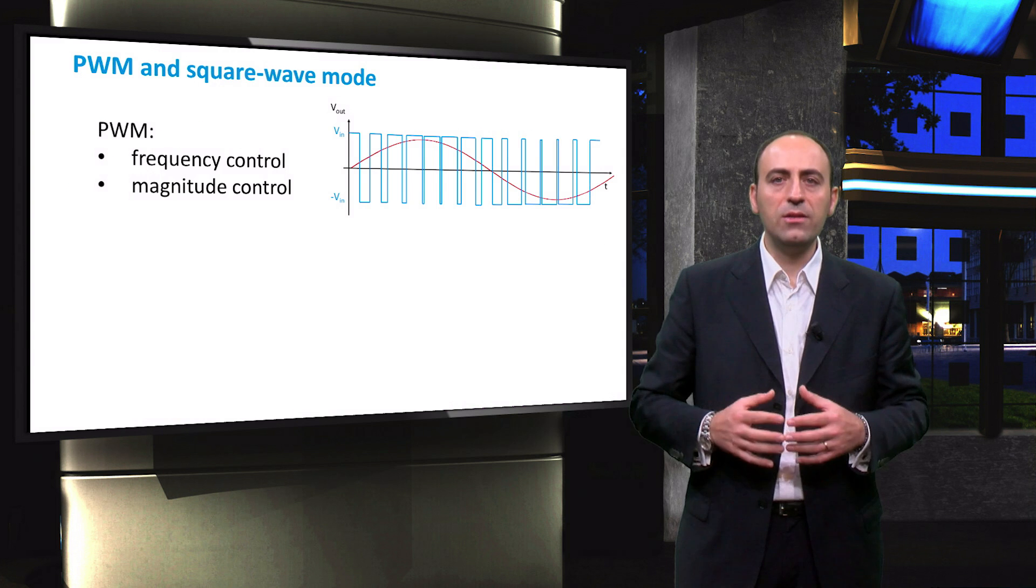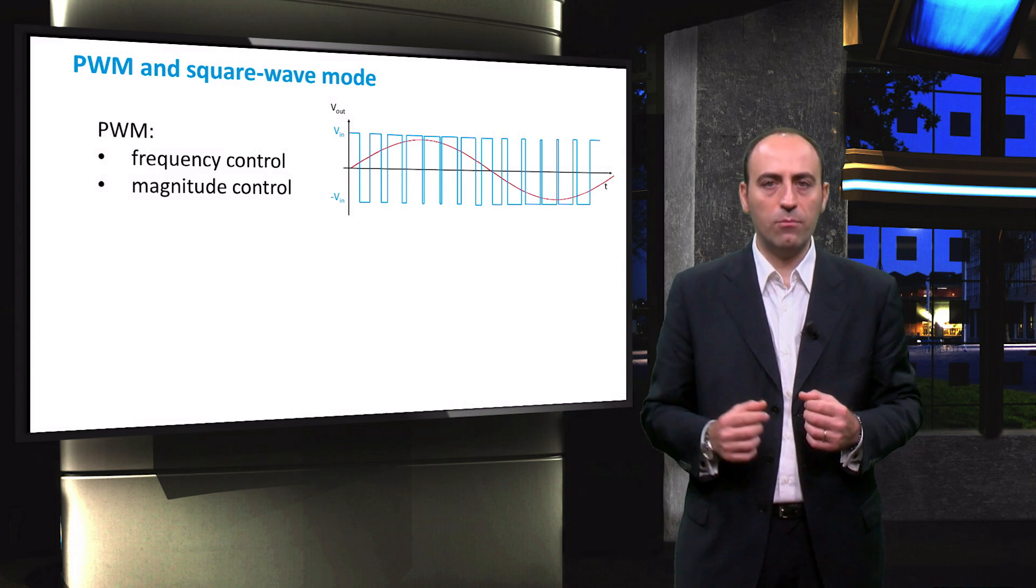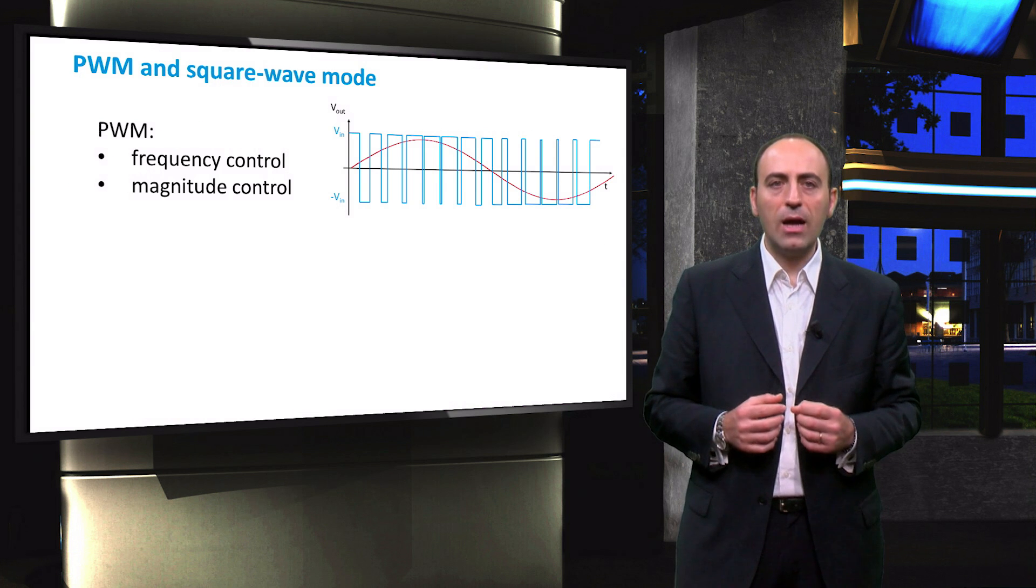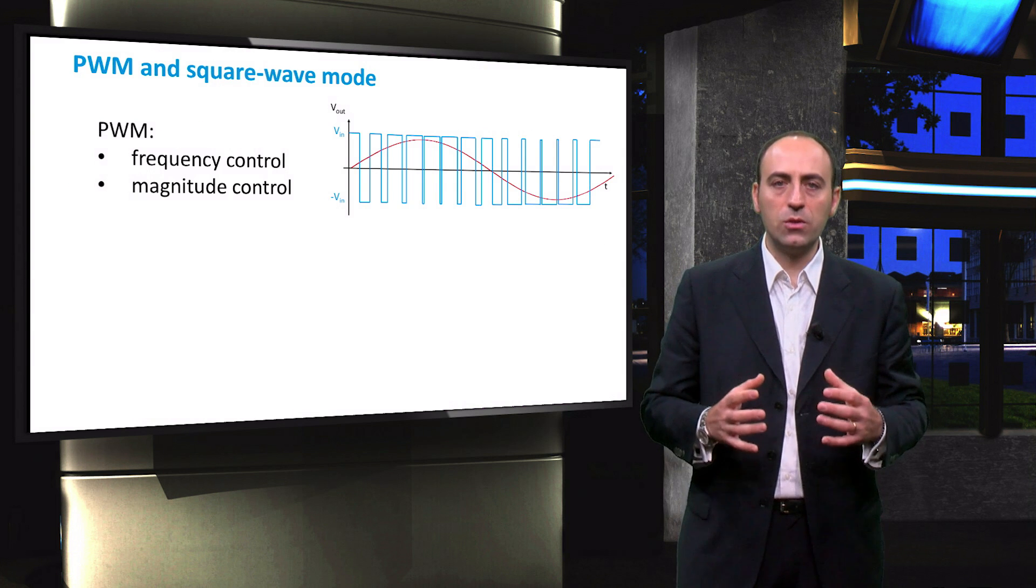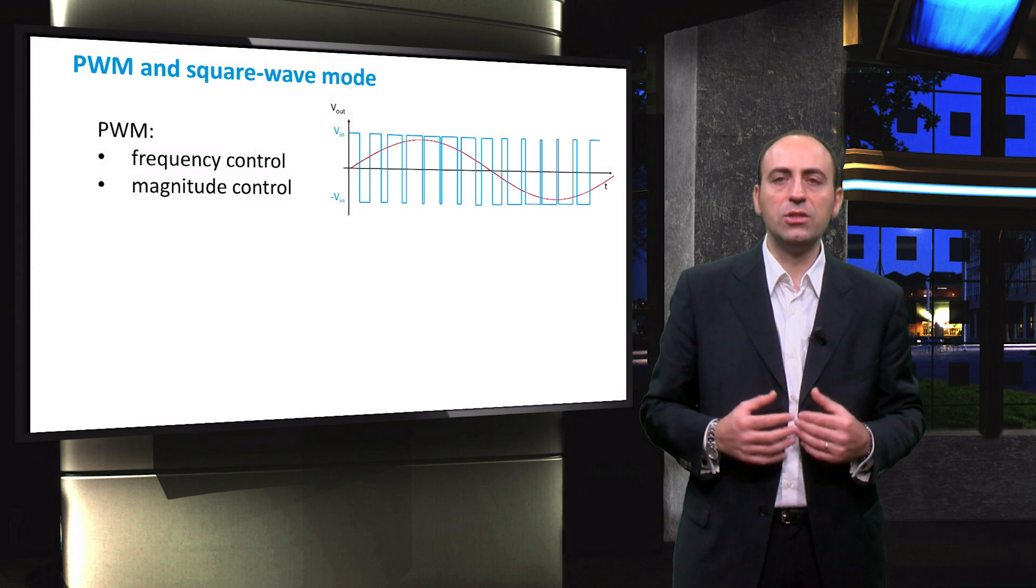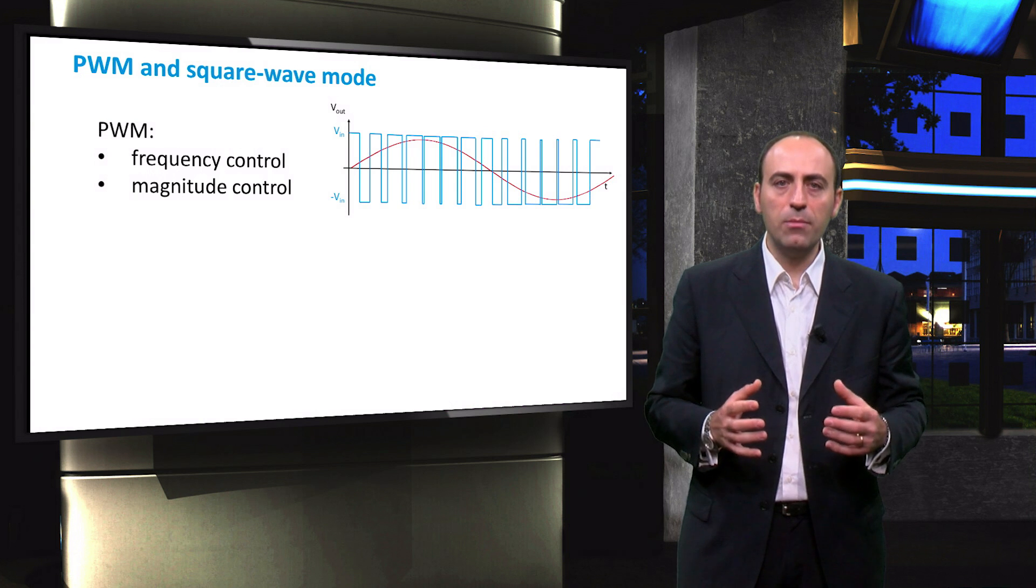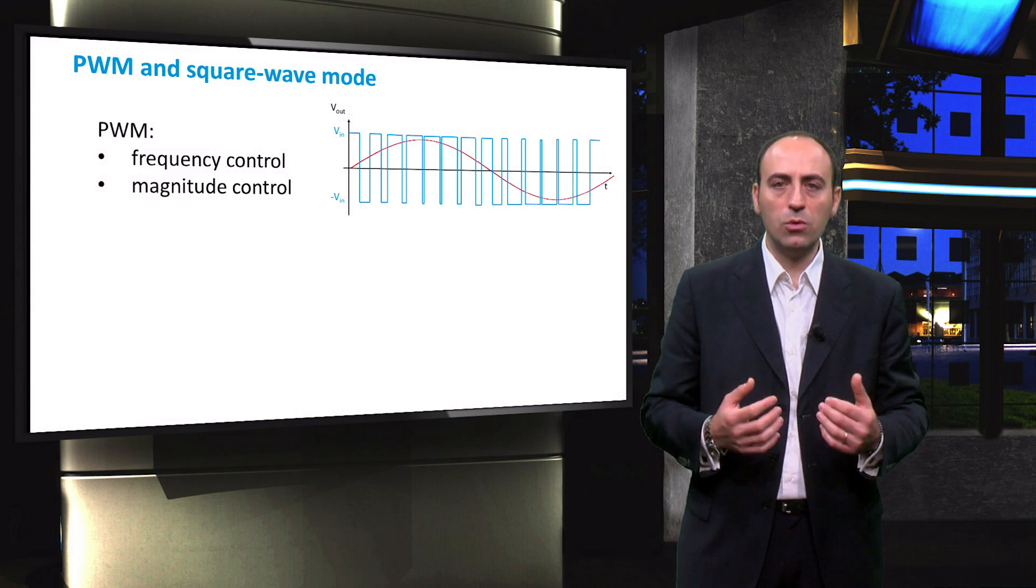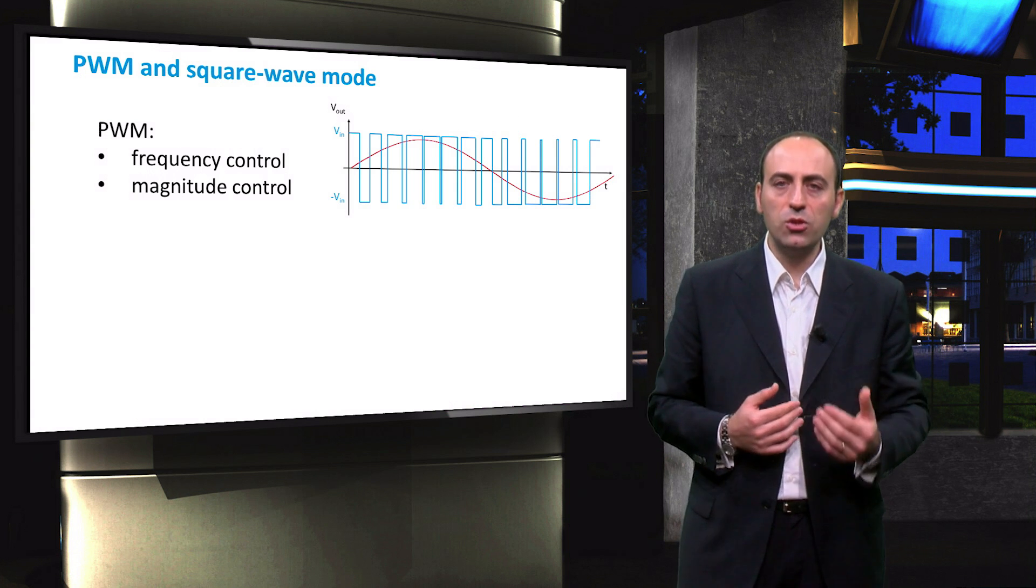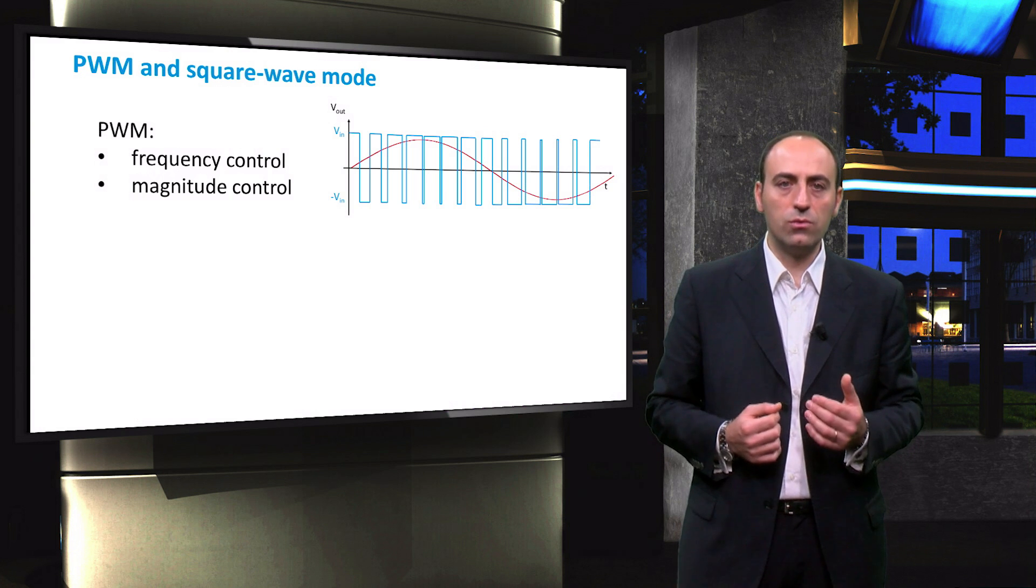Let's now see the main differences between PWM linear mode and the square wave mode. PWM allows us to have both frequency control and magnitude control. The former is obtained by changing the frequency of the input sine signal. The latter can be performed by changing the amplitude modulation ratio, which is the ratio between the amplitude of the input sine and the height of the sawtooth signal.